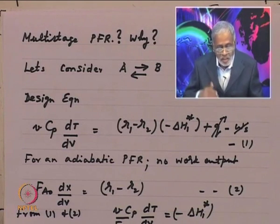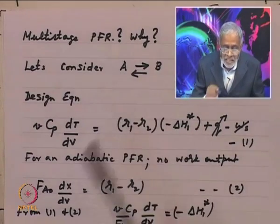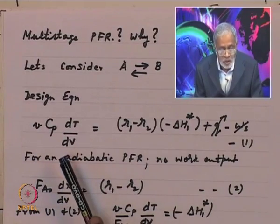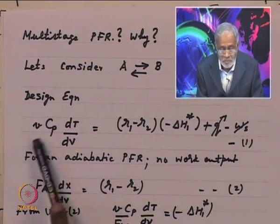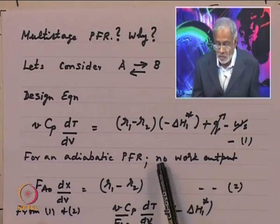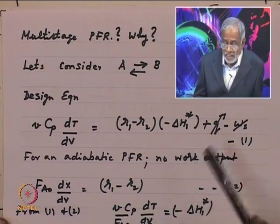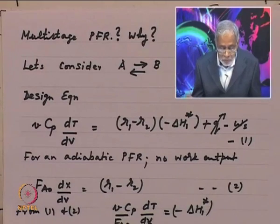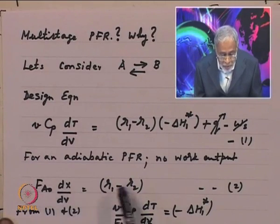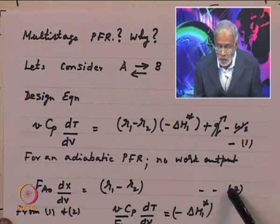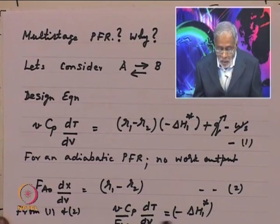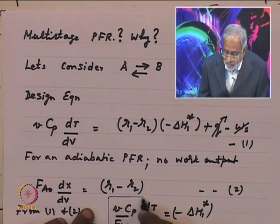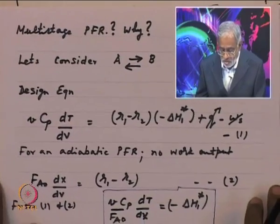Suppose instead we have a multi-stage PFR. The question is often asked: why multi-stage PFR when you can operate a multi-stage CSTR along the locus of maximum reaction rates? We will try to address this question as we go along. For the reaction A goes to B, the design equation of a PFR gives us F_A₀ dx/dV = R₁ minus R₂, and the energy balance relates temperature change to heat of reaction.